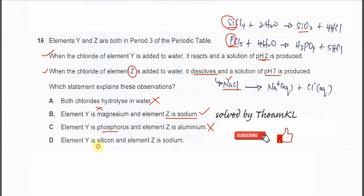Element Y is silicon and element Z is sodium. Yeah, so this is the answer. Right. So now we confirm that the chloride of element Y is silicon tetrachloride. So answer is D. That's all. Thank you.